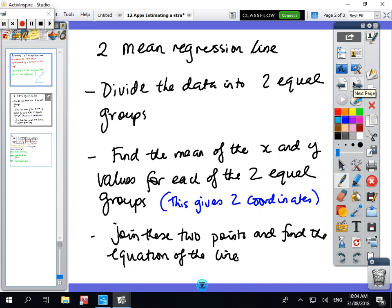Okay so what we're looking at is called a two mean regression line. Means as you know are just averages, and a regression line just means you're trying to put a line in between dots, that's what regression means.